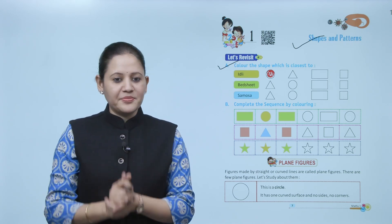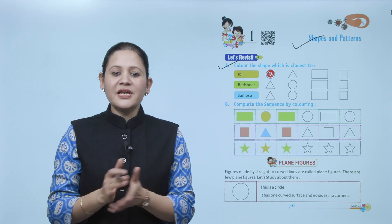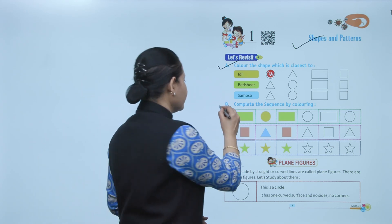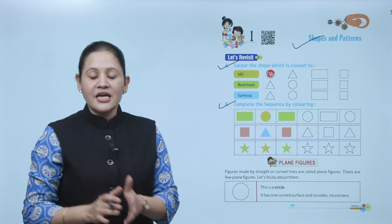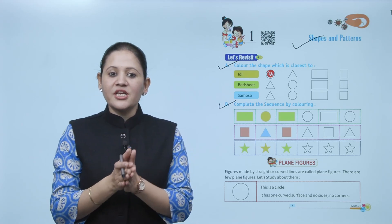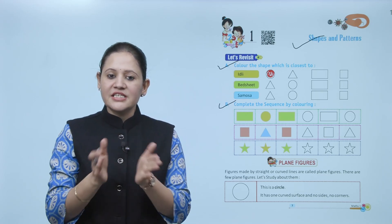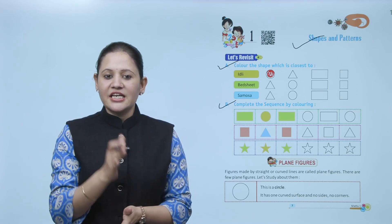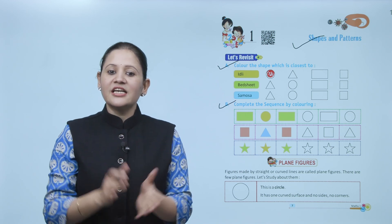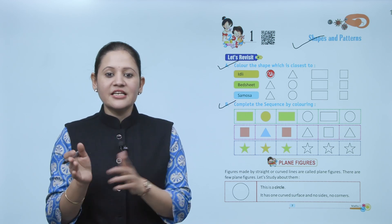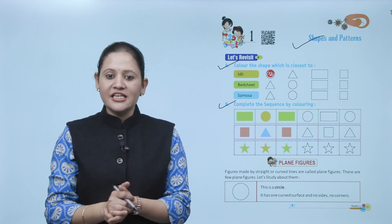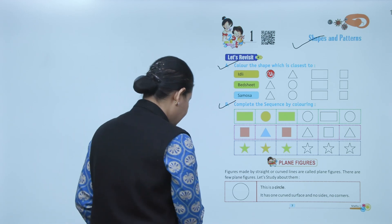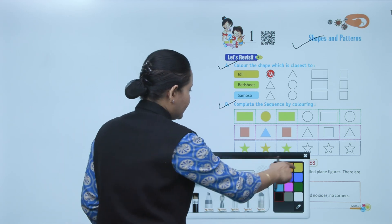Next: complete the sequence by coloring. There's a certain pattern following here. First is a rectangle which is green color, next is a circle yellow, then again rectangle green, then it's a circle so we'll color it yellow, like this.